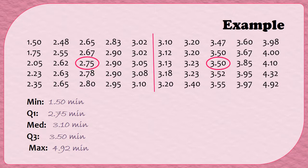Now that we have the five-number summary, we can use it to find the IQR. Remember that IQR stands for interquartile range, and the IQR is found by subtracting the first quartile from the third. So I do Q3 minus Q1, or 3.50 minus 2.75, and that gave me 0.75 minutes.